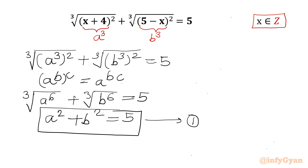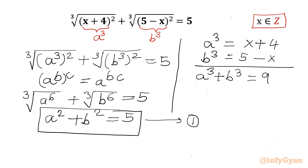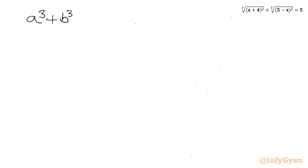Now I will write our substitution equations. So a cube equals x plus 4, and b cube equals 5 minus x. Once I add both, I get a cube plus b cube equal to 9, and this we will call equation number 2. So we have: a cube plus b cube equal to 9, and a squared plus b squared equal to 5.